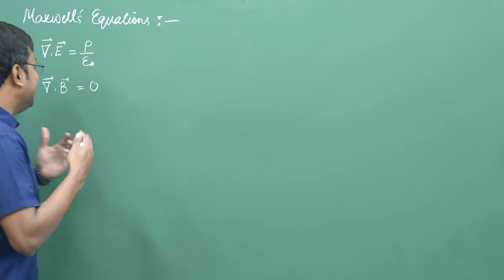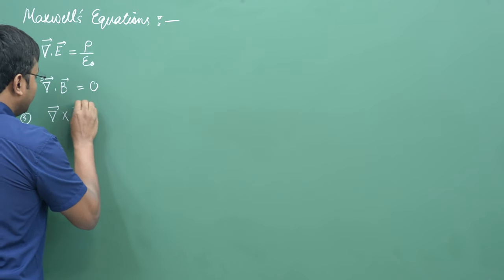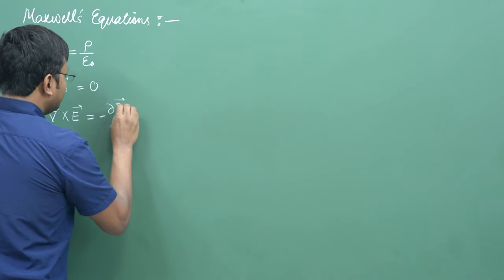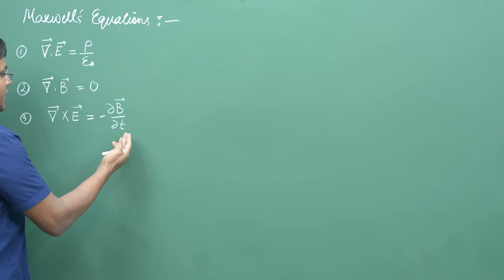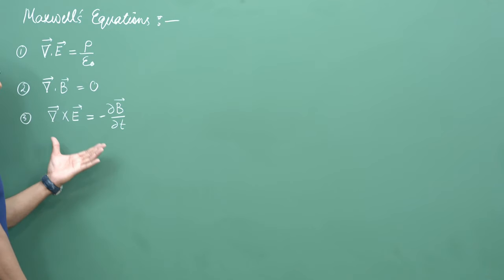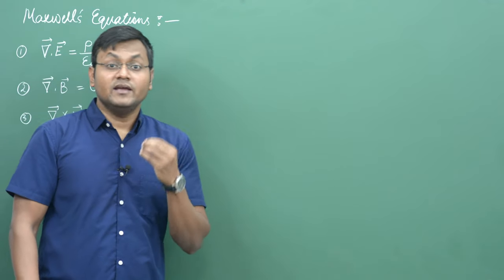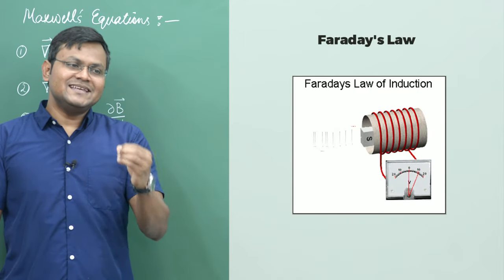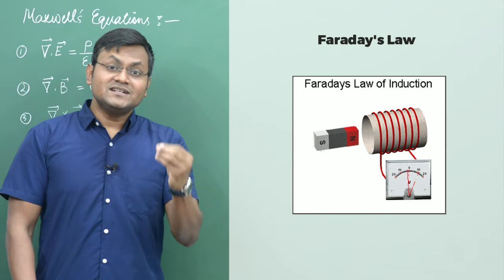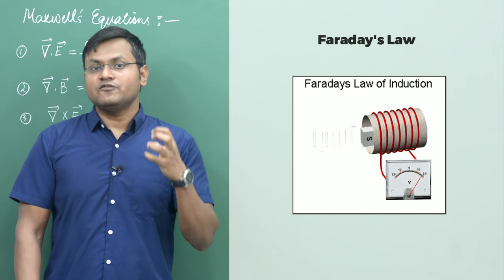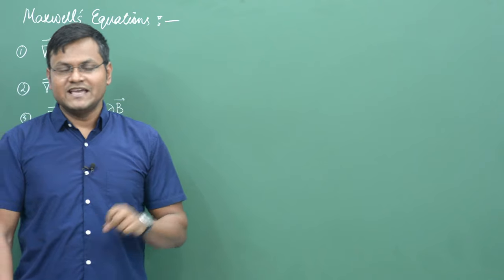Next is Faraday's law of electromagnetic induction, which is the curl of electric field equal to the time derivative of the magnetic field. This equation says that the time variation of magnetic field corresponds to the curl of an electric field, and Faraday's law of electromagnetic induction lies at the heart of electromagnetic generators. Whenever a magnet is in relative motion with respect to a coil, that creates a changing magnetic field which results in the creation of a current in that particular coil. This is the principle because of which we actually have electricity in our homes.